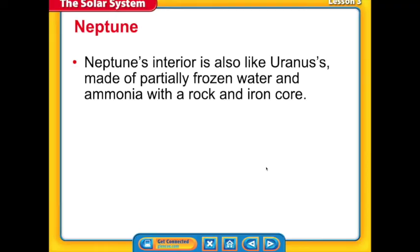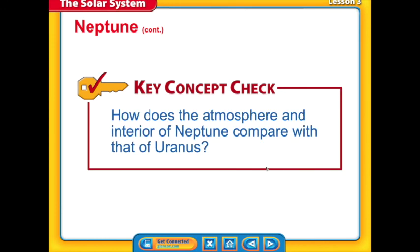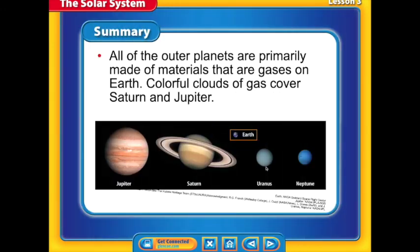So as we continue looking at these worlds, we know that Neptune's interior is also like Uranus. It's made partially of frozen water and ammonia with a rock and iron core. Neptune has at least 13 moons and a faint, dark ring system. And all of the outer planets are primarily made of materials that are gases on Earth, but they are liquid on these worlds. That concludes our lesson for today.